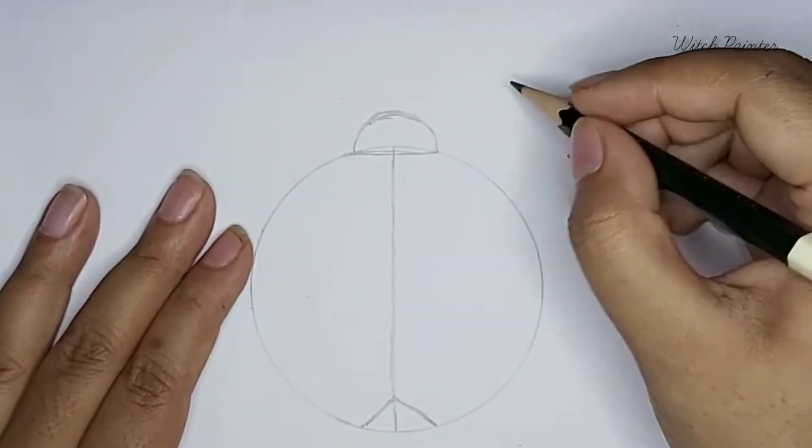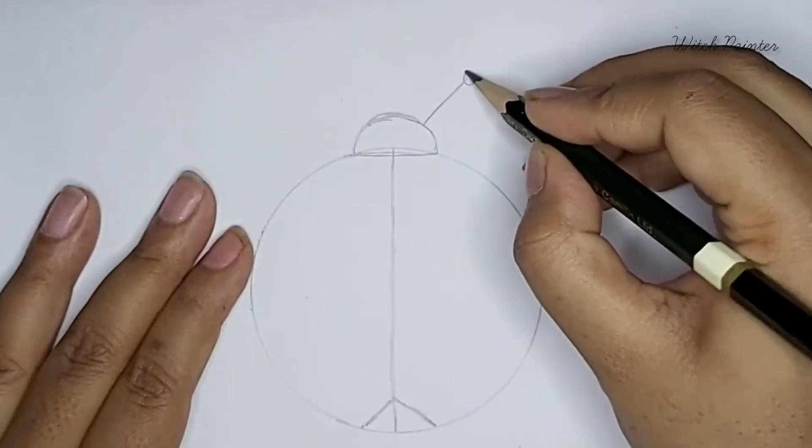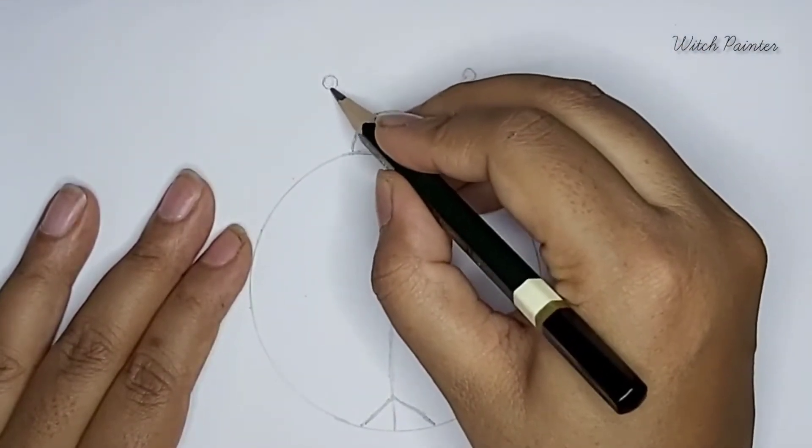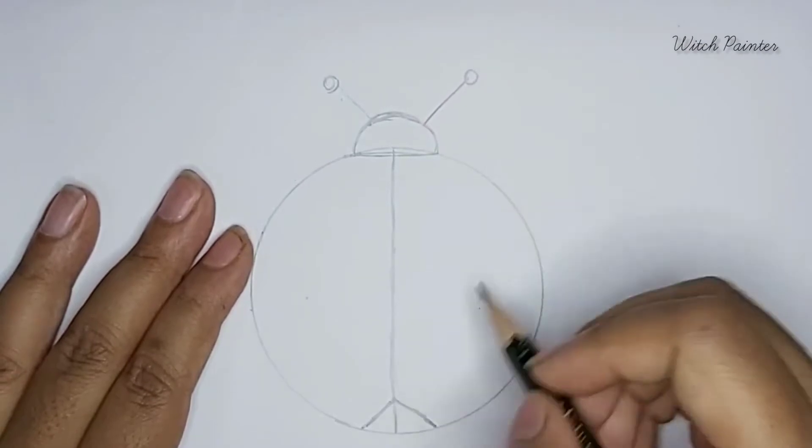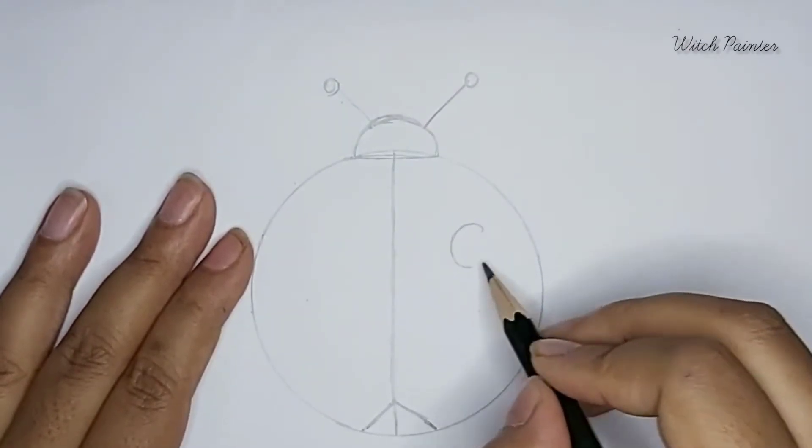Now draw its antennas, and now draw some circles inside the ladybird's body.